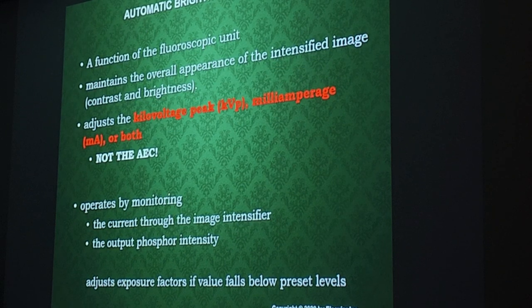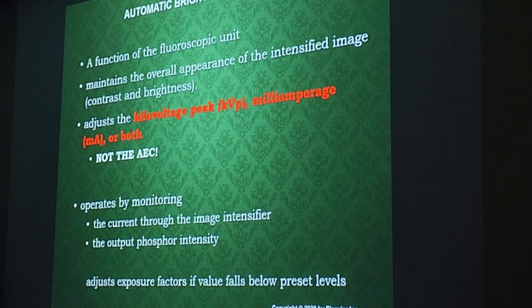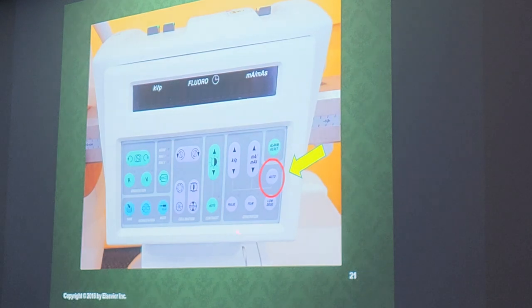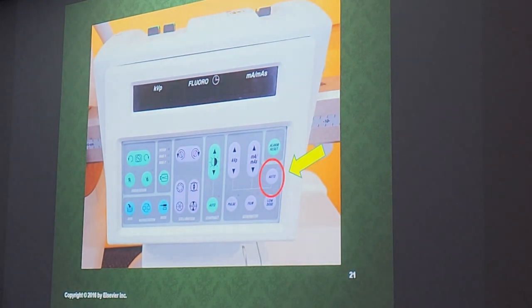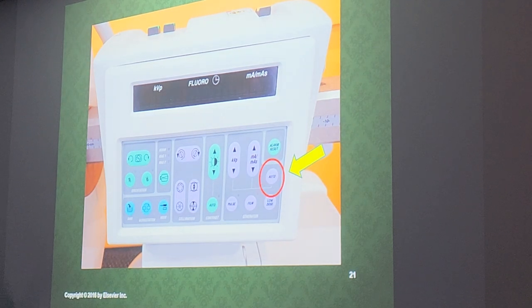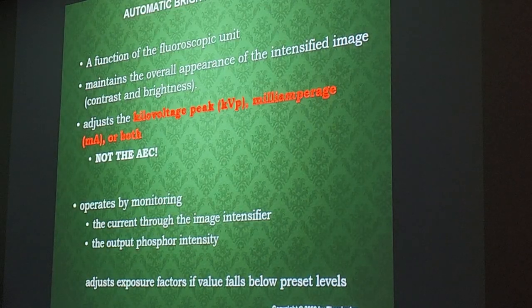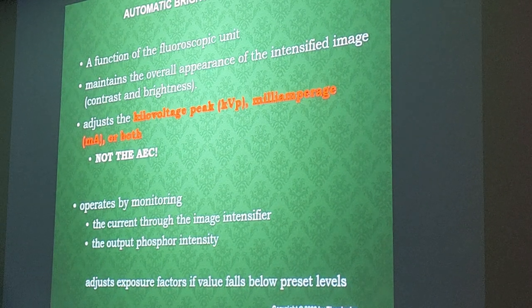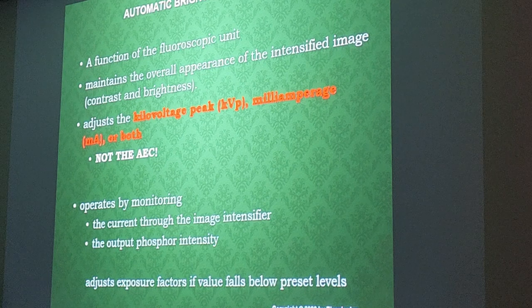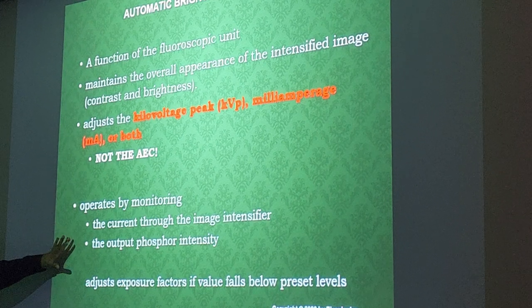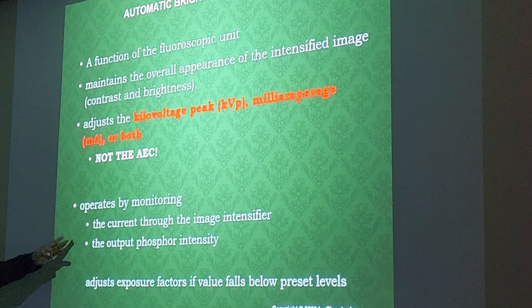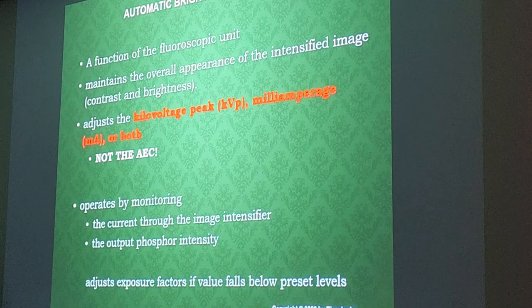Our fluoro systems and C-arms have something called ABC — automatic brightness control. Typically if techs have the auto button on, they're not manually adjusting the kVp or mA — it sets it for you. ABC helps maintain the overall appearance of the image by controlling contrast and brightness, and it adjusts the kVp, mA, or both. It works by monitoring the current coming through the image intensifier and the output phosphor intensity.